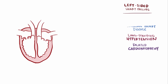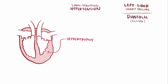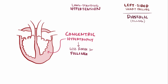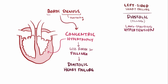Even though systolic failure is most common in left-sided heart failure, diastolic or filling dysfunction can also occur. In hypertension, the left ventricle hypertrophies concentrically — new sarcomeres are generated in parallel with existing ones — so the heart muscle wall enlarges and crowds into the ventricular chamber space, resulting in less room for blood. This means hypertension can cause diastolic heart failure in addition to systolic dysfunction. Concentric hypertrophy leading to diastolic failure can also be caused by aortic stenosis, a narrowing of the aortic valve, as well as hypertrophic cardiomyopathy, an abnormal ventricular wall thickening often from a genetic cause.